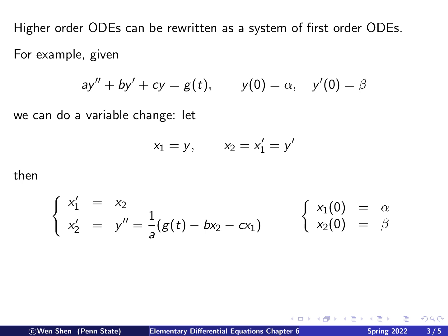And then finally, we need to give the initial condition of x1 and x2 at 0. So what is x1 at 0? Well, we see that it's just y at 0, so it's alpha. And then what is x2 at 0? We see that it's y prime at 0, which is beta. So from this example, even though it's a specific example, we see that for a second-order equation, those we are studying here in this course, we can rewrite it into a system of two first-order equations.